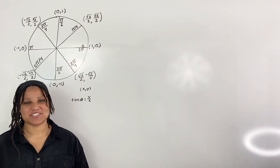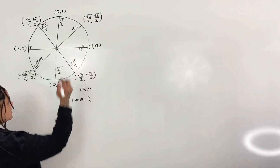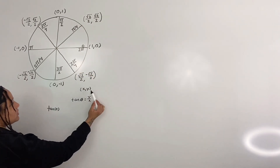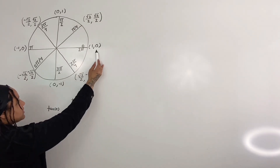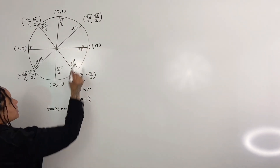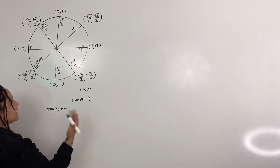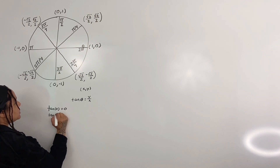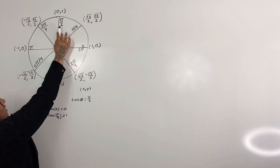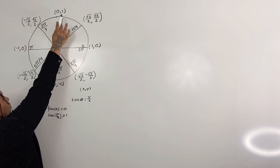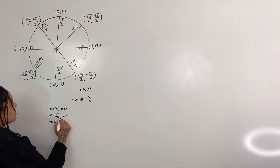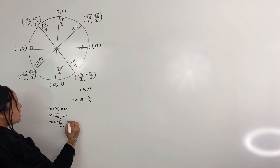Let's write a few values for tangent. Starting with 0: tangent of 0 is going to be your y value over your x value, so 0 over 1 is just 0. Tangent of pi over 4 is going to be root 2 over 2 divided by root 2 over 2 — anything over itself is 1, so tangent of pi over 4 is 1. Tangent of pi over 2 is 1 over 0; anything over 0 is undefined, so tangent of pi over 2 is undefined.